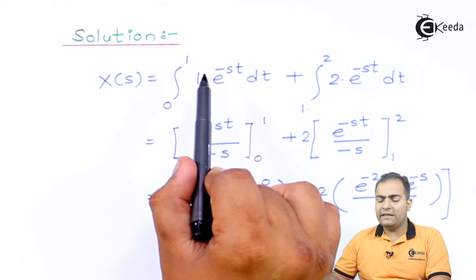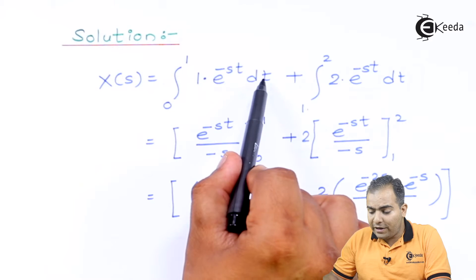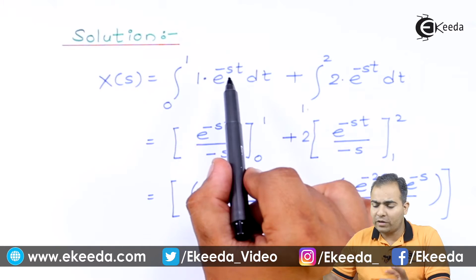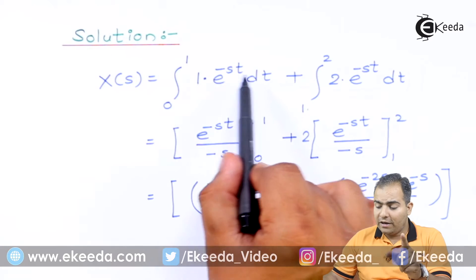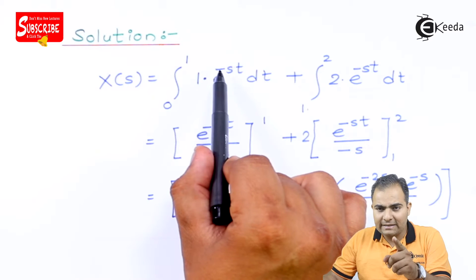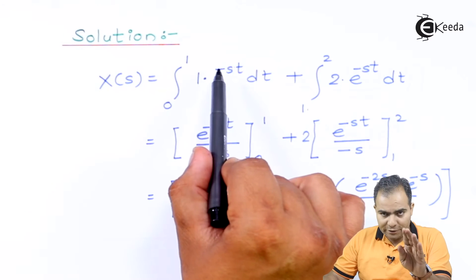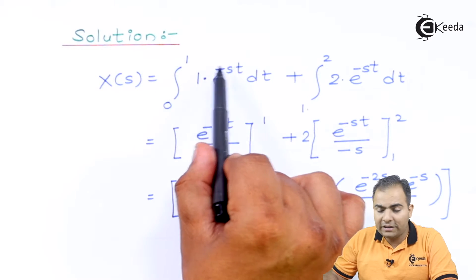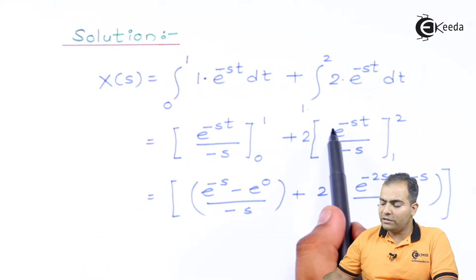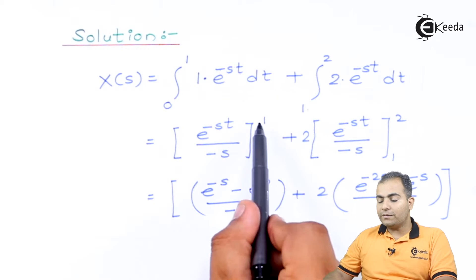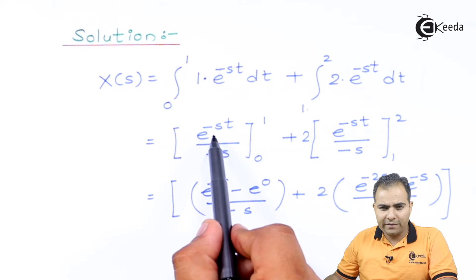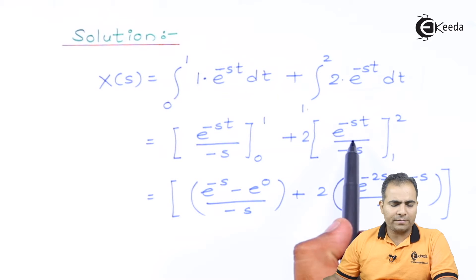We integrate e^(-st) with respect to time t on both sides. The integration of an exponential function e^(-st) is e^(-st) divided by its constant, which is minus s. So the result is e^(-st) / (−s), evaluated at the respective limits. In the first case the limit is zero to one, and in the second the limit is one to two. The upper limit is substituted first, then the lower limit.